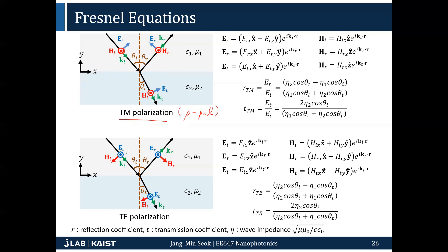If your magnetic field is normal to the plane of incidence, this is called TM polarization, also called p-polarization. On the other hand, if the electric field — not the magnetic field — is normal to the plane of incidence, it's called TE polarization or s-polarization. You can solve for each case and get the reflection and transmission coefficients.